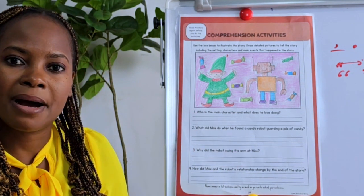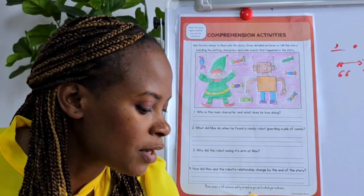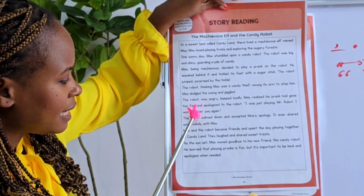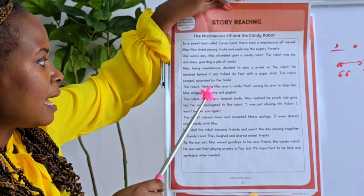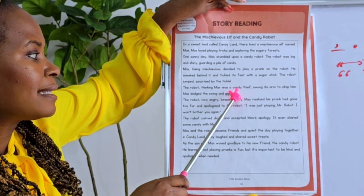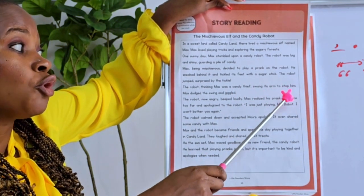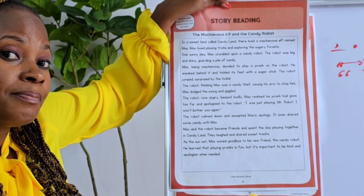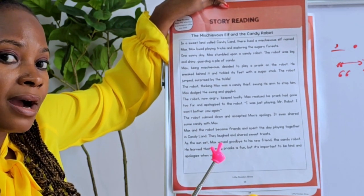Why did the robot swing its arm at Max? Let's go back to the story and scan through to find the part where it says the robot swung its arm. 'The robot, thinking Max was a candy thief, swung its arm to stop him.' So why did the robot swing its arm? The robot swung its arm at Max...